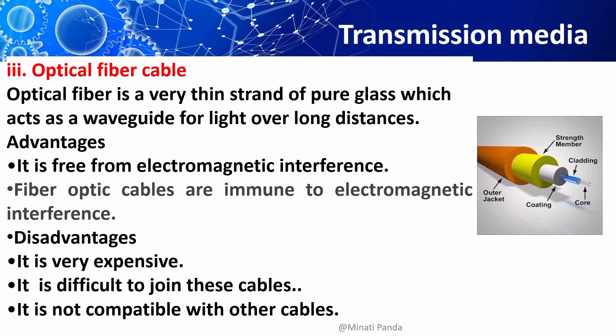The advantages of fiber optic cable include being free from electromagnetic interference, making it highly suitable for harsh industrial environments. It guarantees secure transmission and has a very high transmission capacity. Fiber optic cables can also be used for broadband transmission, where several channels are handled in parallel.